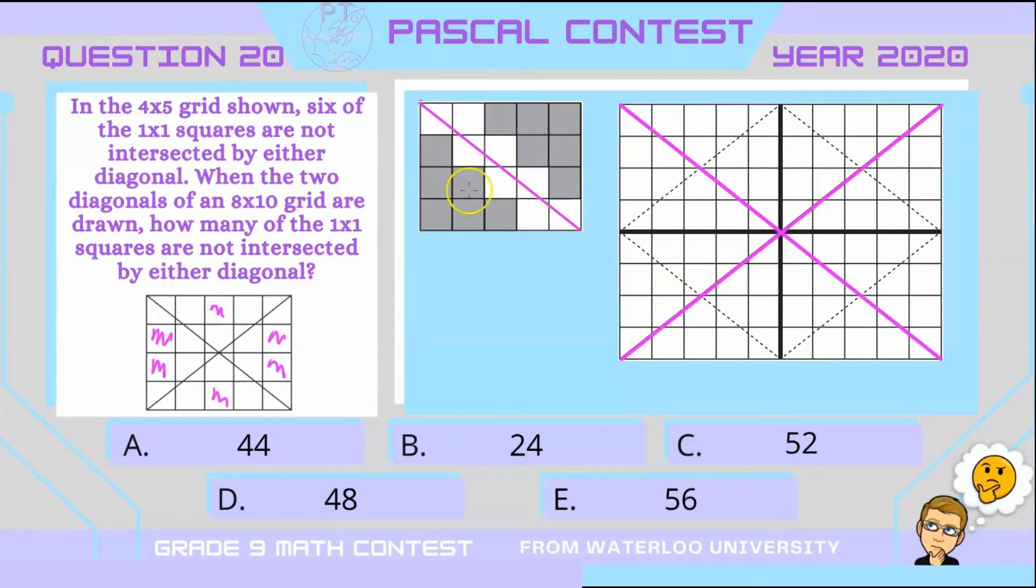Now each one is basically a copy of this one on the side, where we would have a total of 12 squares for each one, which do not intersect the diagonal.